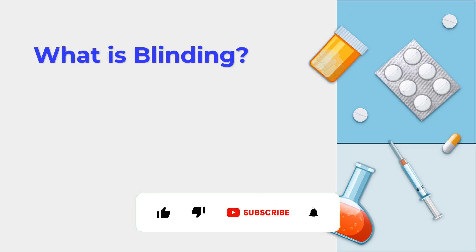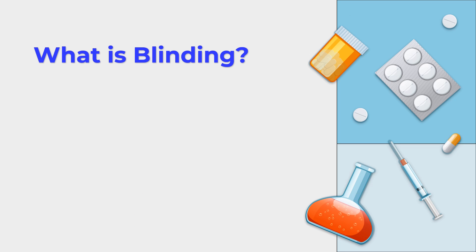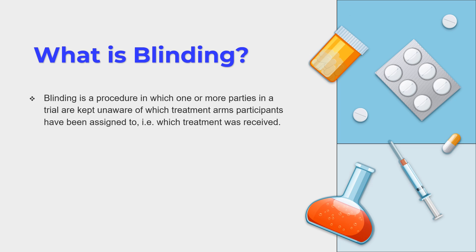Next, let us understand blinding. You may have heard the term 'blinded clinical trial' or 'performing blinding in this particular trial design.' Blinding is a procedure in which one or more parties in a clinical trial are kept unaware of the treatment arms — that is, which treatment is given to which particular subject and how that treatment is received.